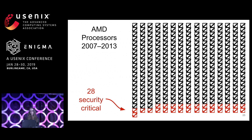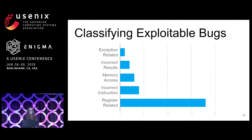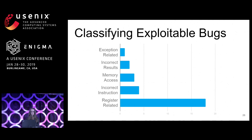We examined the security-critical errata to find what they have in common and how they might be categorized. We focused on the effect of the bug, not how it is achieved, and developed five classes. First: exception-related — a bug resulting in the processor ignoring an exception or passing control to the wrong exception handler. Second: incorrect results — an operation does not correctly update state after an instruction commits. Third: memory access — software is able to access memory it should not. Fourth: incorrect instruction — the wrong instruction gets executed, for example a call instruction treated as a no-op. Fifth: register-related — the wrong value is read from or written to a privileged register visible to software.